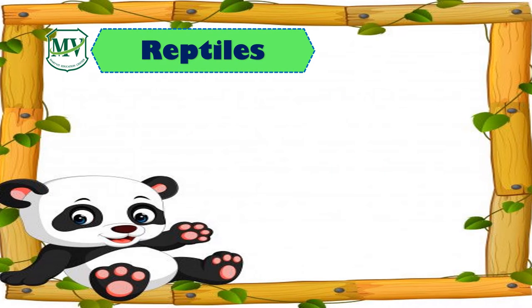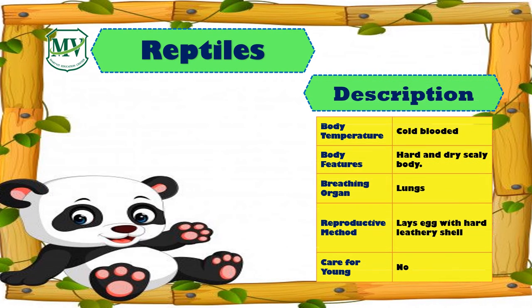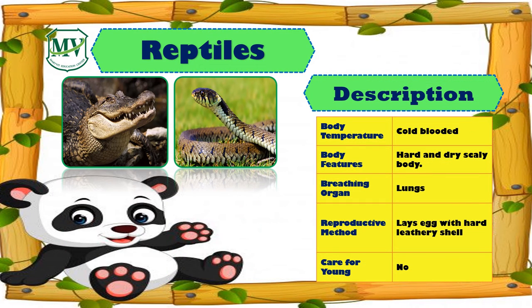Next are the reptiles. Reptiles are cold-blooded animals, like crocodile and snake. They have hard and dry, scaly bodies and breathe through their lungs. They lay eggs with a leathery shell.